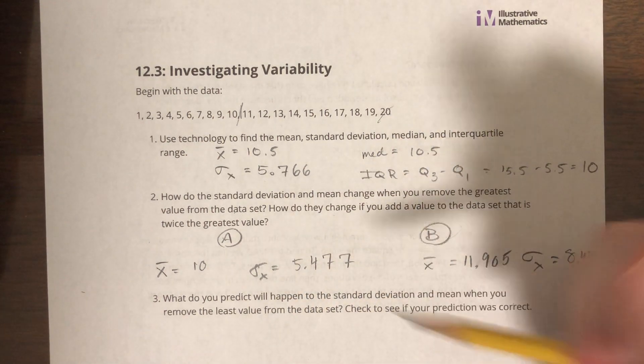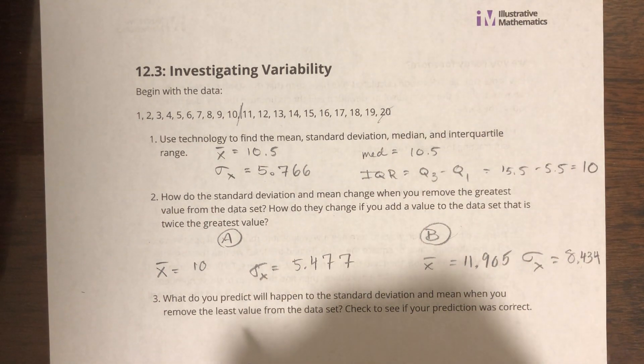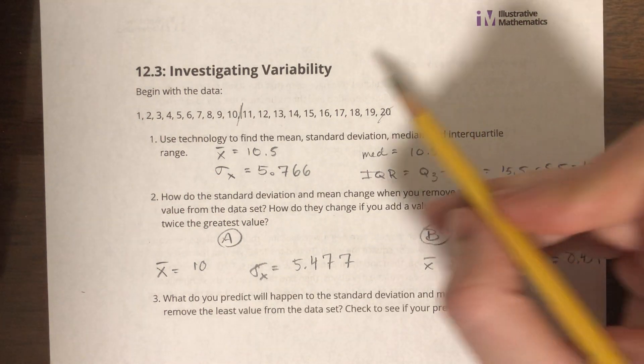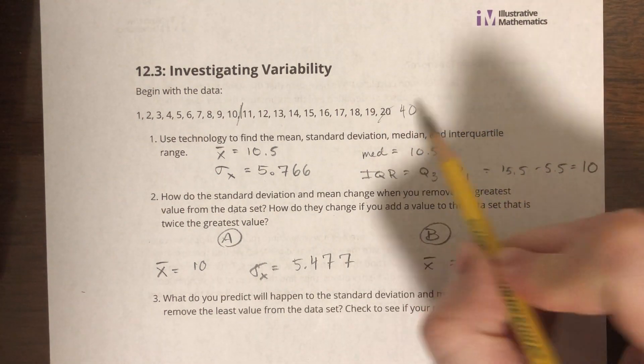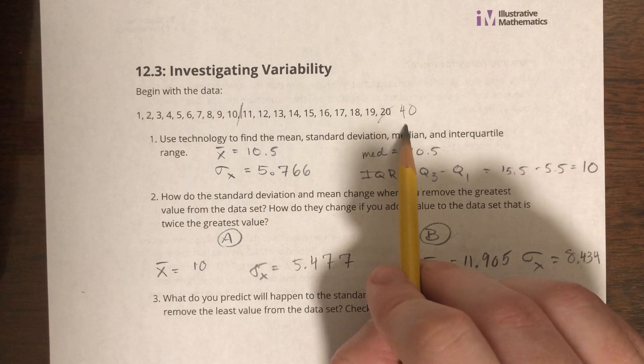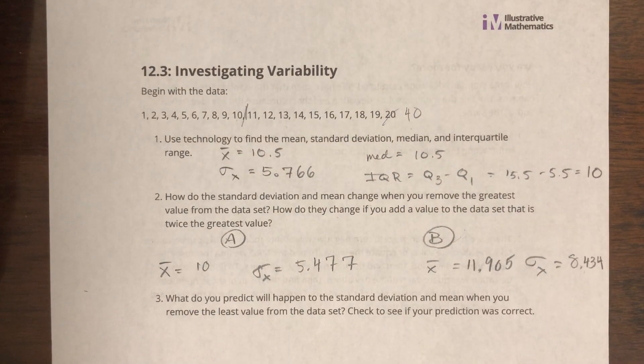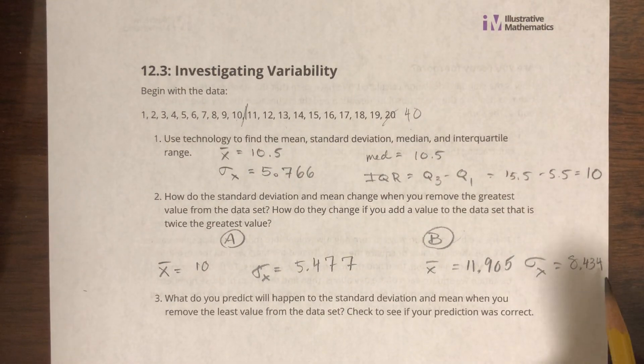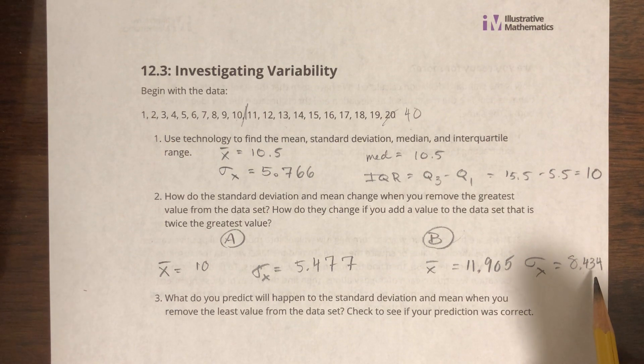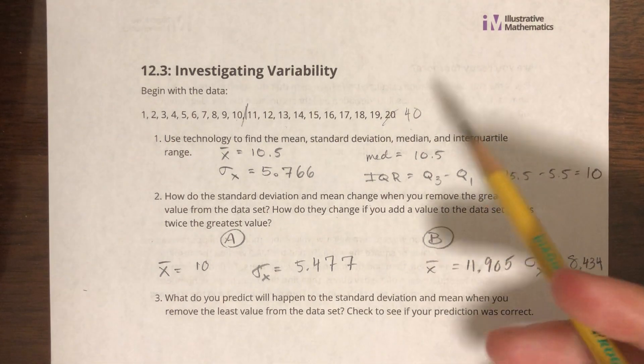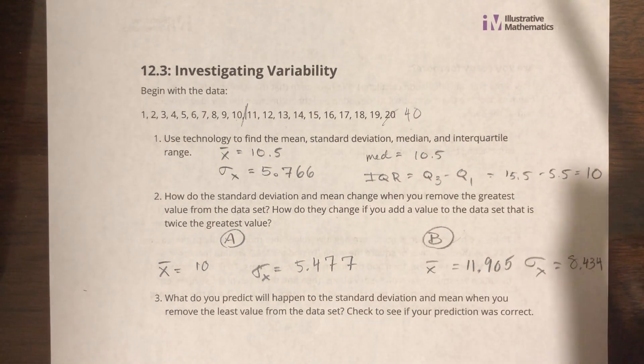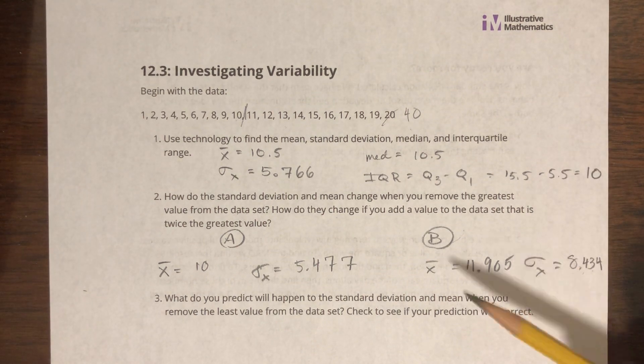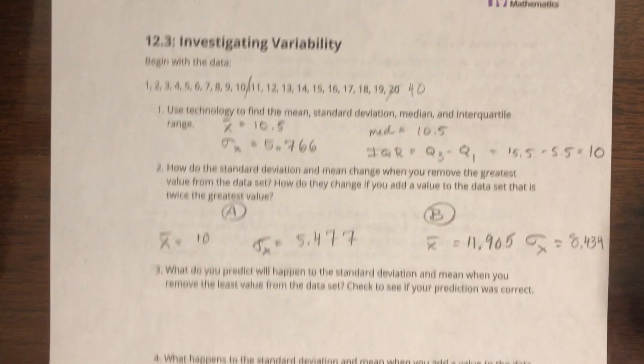So by taking it away, I lower that standard deviation. Things are not as far apart anymore. When I add a number that is super far away from the mean, 40 is so far away from 10.5, that one value really jumps that standard deviation up a lot. So that's what we call an extreme.